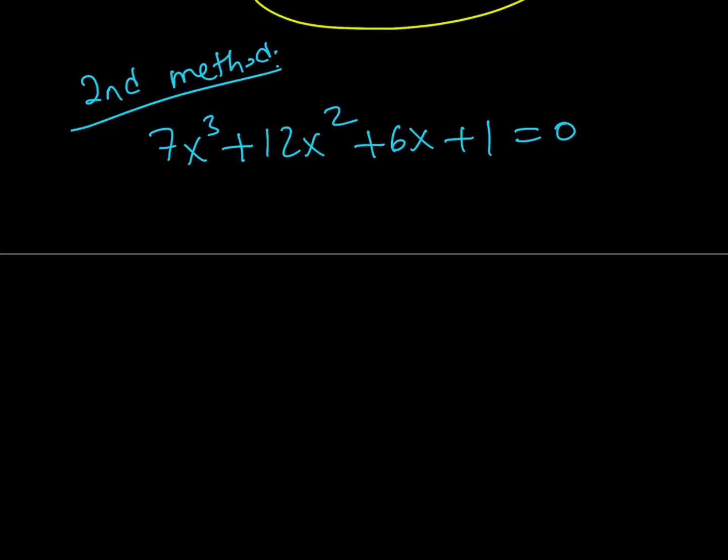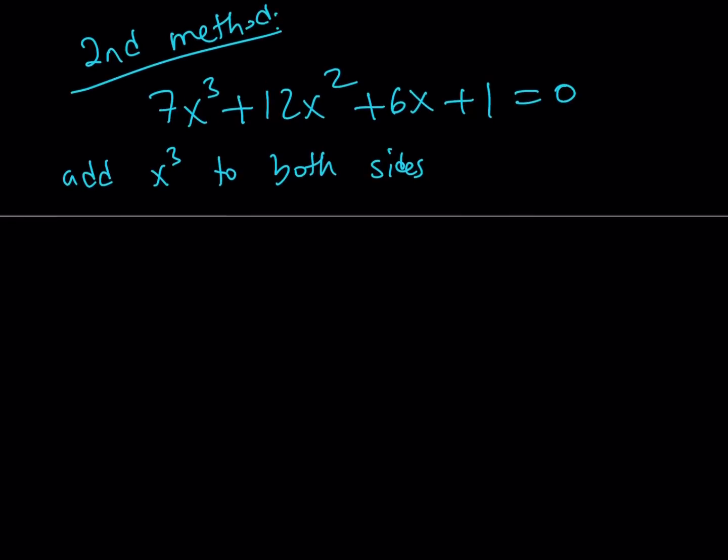Well, it should. This should remind you that we're dealing with the binomial theorem. Okay. To be more precise, I'm talking about something cubed here, right? And so, here's what I'm going to do. I'm going to add x cubed to both sides. You'll see why I'm doing this in a little bit. When I add x cubed to both sides, basically, I'm going to be getting 8x cubed plus 12x squared. Do you see what I see? Hopefully.